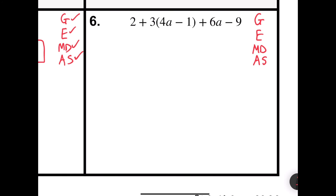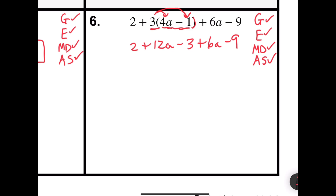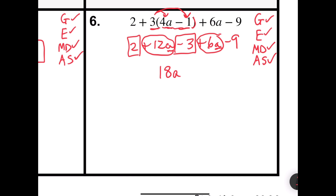Problem number 6 says 2 plus 3 times 4a minus 1 plus 6a minus 9. Starting with grouping symbols: 4a minus 1 — not workable, not like terms. There are no exponents in the problem. So I look at multiplication and the distributive property: 3 times 4a is 12a, and 3 times negative 1 is negative 3. That gives 2 plus 12a minus 3 plus 6a minus 9. Last, combining like terms: 12a plus 6a is 18a. And 2 minus 3 minus 9 is negative 10. So my answer is 18a minus 10.